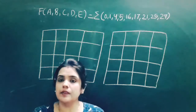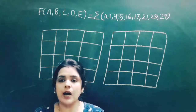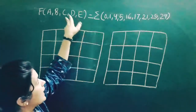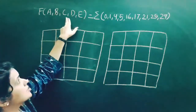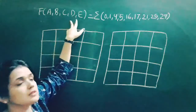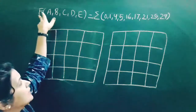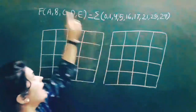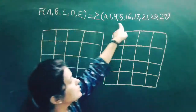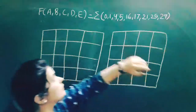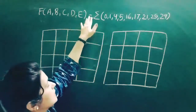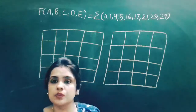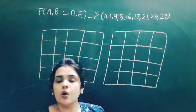In today's video, we will solve numericals based on 5-variable K-maps. This is the boolean function corresponding to 5 variables where a, b, c, d, e are the 5 variables and F is the output. This boolean function says that F is 1 on the occurrence of the following minterms, that is when the value of a, b, c, d, e gives minterms 0, 1, 4, 5, and so on.